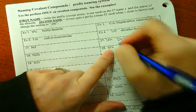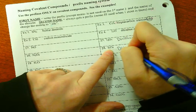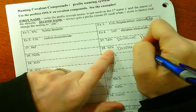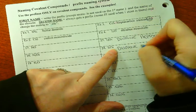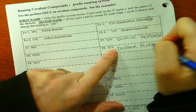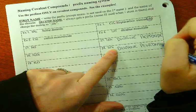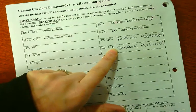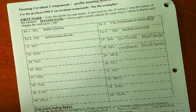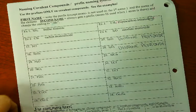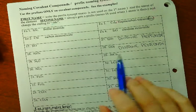For this one, it's still diiodine, but now it's pentoxide, because there's only five oxygen. You leave off the 'a' if it's oxygen. Instead of pentaoxide, it's pentoxide.